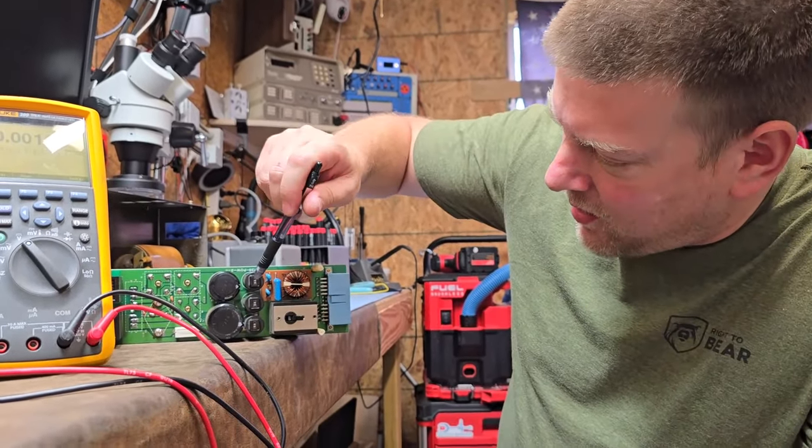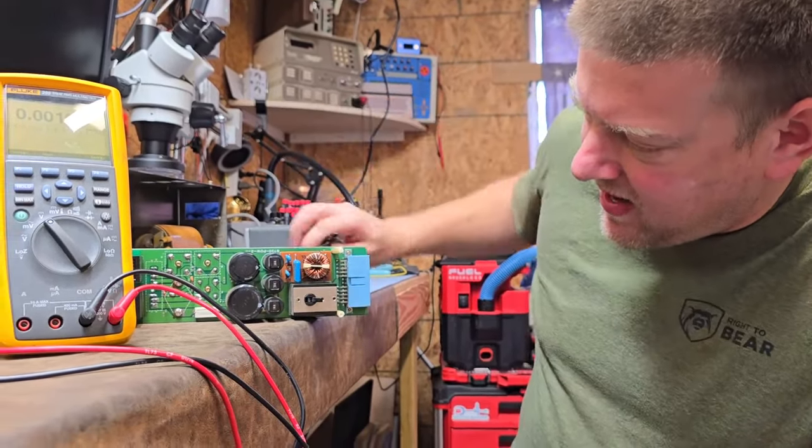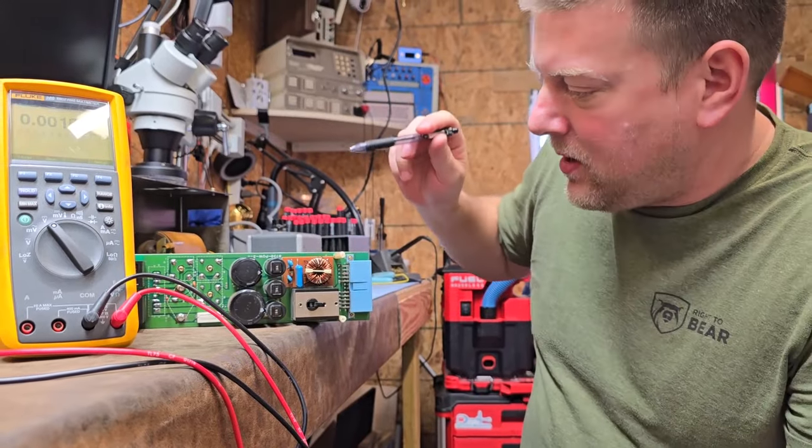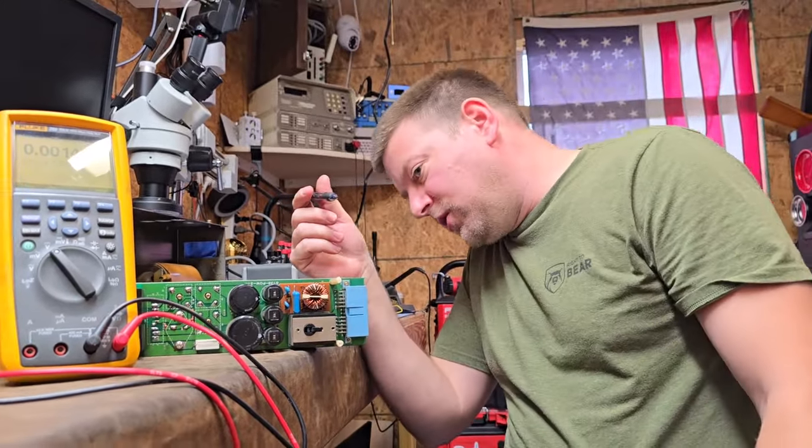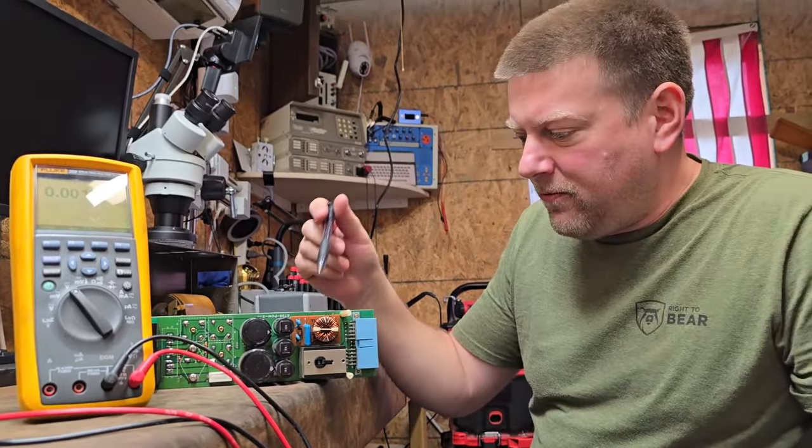So I've got three resettable circuit breakers here - I got 8 amp, 3 amp, and 5 amp - and I've got a little choke, a little power filter.